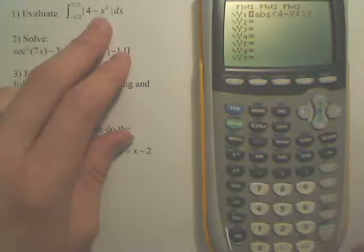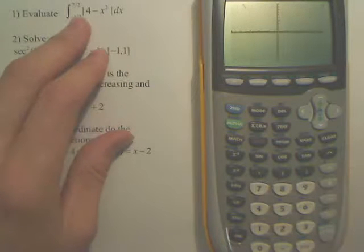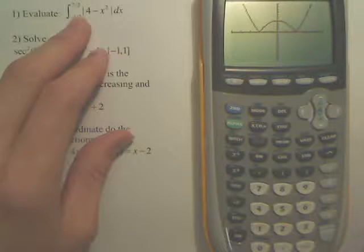Make sure you get the absolute value. And then what we want to do is we just graph it. Kind of a parabola that got flipped whenever it was negative.